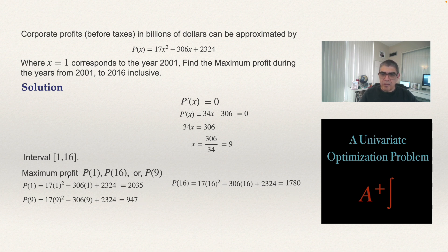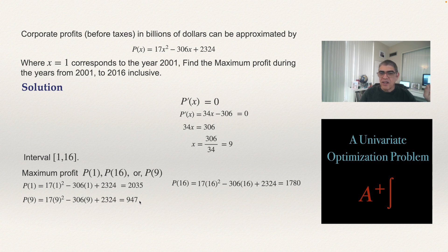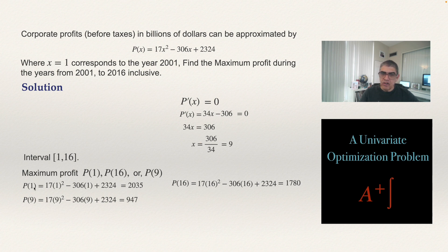Comparing all three values: P(1) = 2035, P(16) = 1780, and P(9) = 947. The maximum profit in this interval was 2035 billion dollars, occurring in 2001. The critical value x = 9 actually gave the minimum profit of 947 billion dollars.